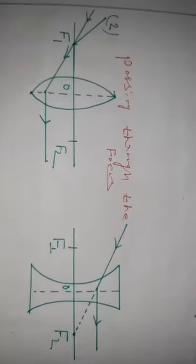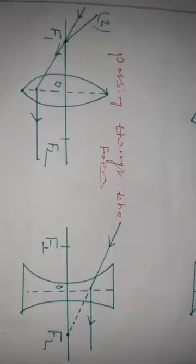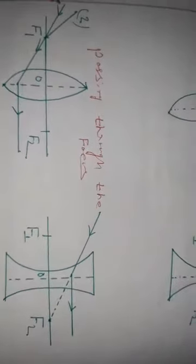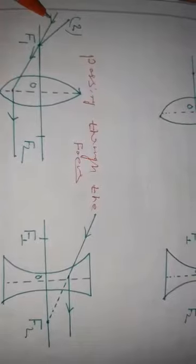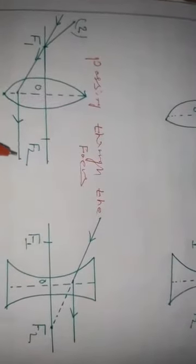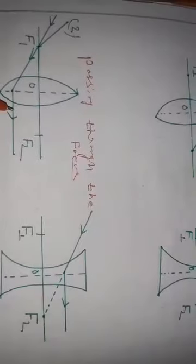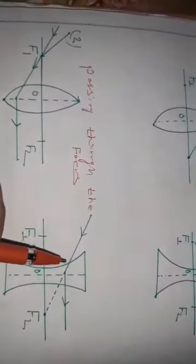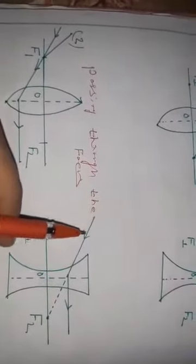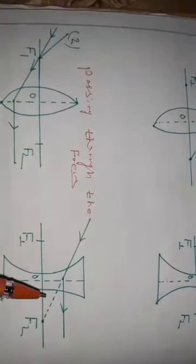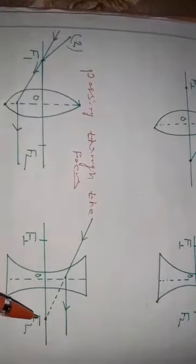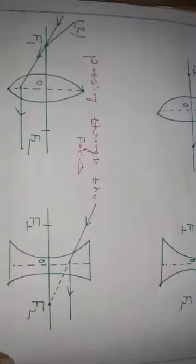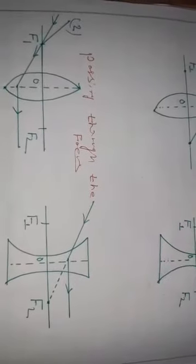The second rule: when the ray is passing through the focus, after refraction it becomes parallel to the principal axis — in the case of a convex lens. And a ray directed to the focus will emerge parallel to the principal axis in the case of a concave lens.